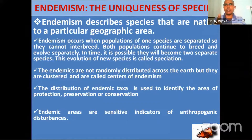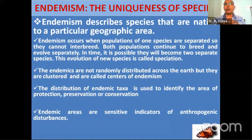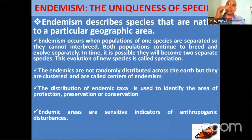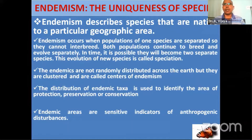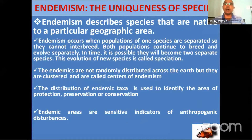Once a species goes extinct, we cannot bring it back. Endemic species are very sensitive — any disturbance, whether climatic, edaphic, environmental, or human-induced, puts them at risk of endangerment and extinction. Areas containing endemic species should be declared highly protected conservation areas to preserve these endemic plant and animal species.